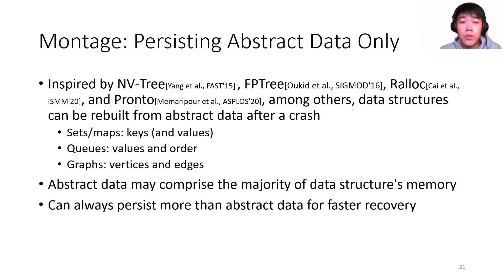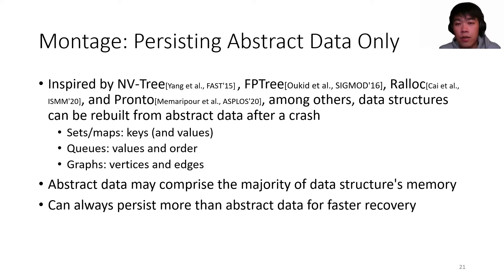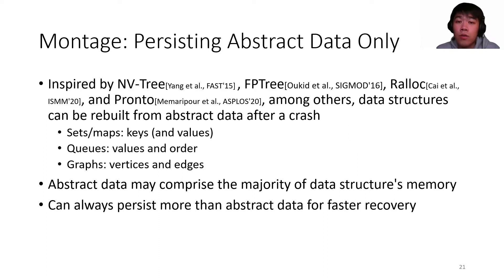Montage further reduces persistence overhead by reducing the amount of persistent data. Prior works like non-blocking persistent memory allocator Ralloc, and persistent data structure implementations like NVTree, FPTree, and Pronto showed that after crashes, data structures can be rebuilt from a set of data representing their abstraction. For example, the abstract data of sets and mappings can be their keys and values; for queues, it can be their values and queue node orders; for graphs, it can be vertices and edges together with their relationships. Montage allows data structures to only persist those data and helps iterate through abstract data during recovery so the transient indexing can be rebuilt.